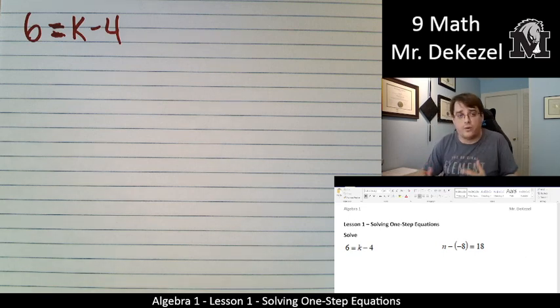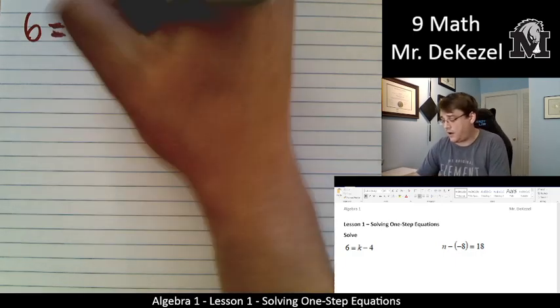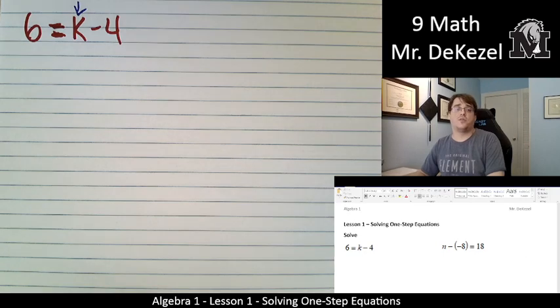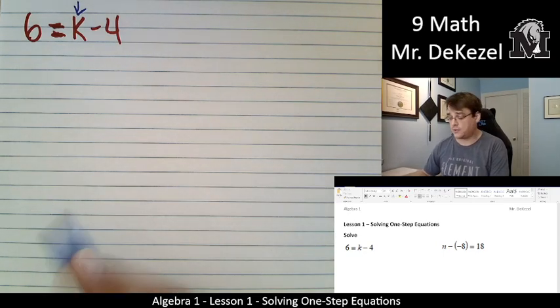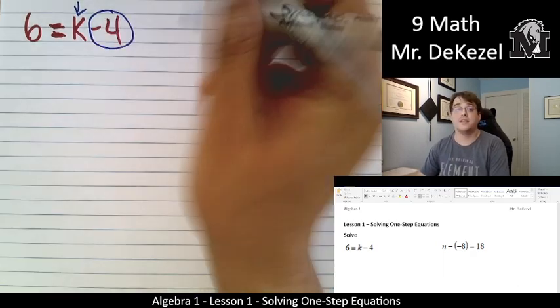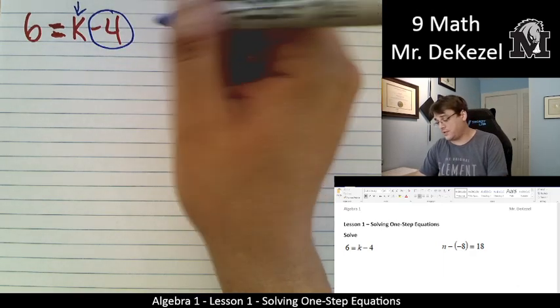So I have 6 equals k minus 4. You probably might know what k is just by looking at it. Like, oh, what number minus 4 equals 6? But we have a method to this for when we don't know. And what we're going to do is we're going to isolate k. We want to get k all by itself. So we are going to take whatever is on the side with k and move it across the equal sign. I'm going to take this 4 and I'm going to move it across.